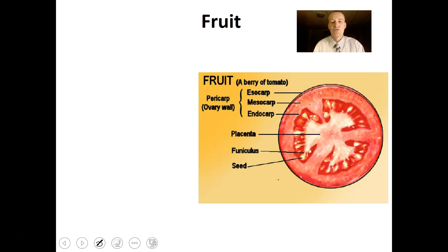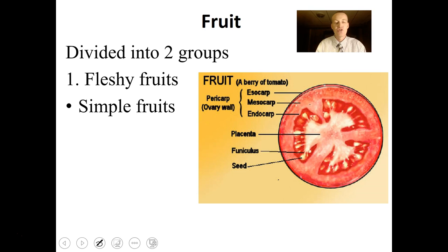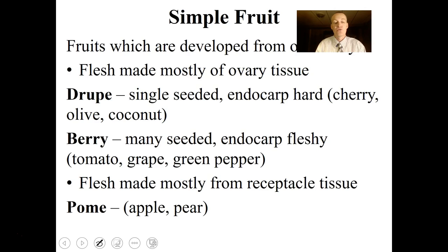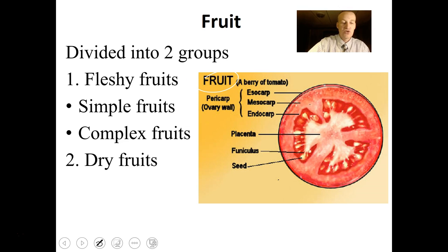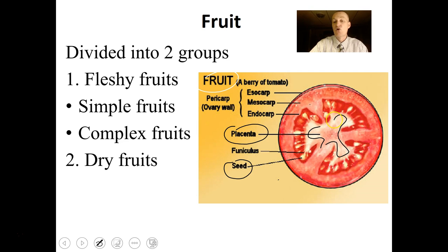Fruit are divided into fleshy fruits — which can be simple or complex — and dry fruits. A fruit has seeds, a placenta where the ovules were attached, and a pericarp which is the ovary wall with outer, middle, and inner layers called exocarp, mesocarp, and endocarp. Different kinds of fruits have different levels of flesh — some are more fleshy, others are dry.